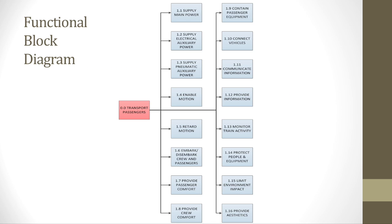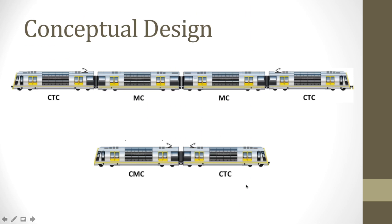A train as a system can be quite complex, therefore functional block diagrams aid in defining the systems and their role. The functions of a train can range from anything such as enabling traction — the motors — all the way to brakes retarding the motion. It can also include things such as couplers, passenger information, aesthetics, environment, and everything in between.